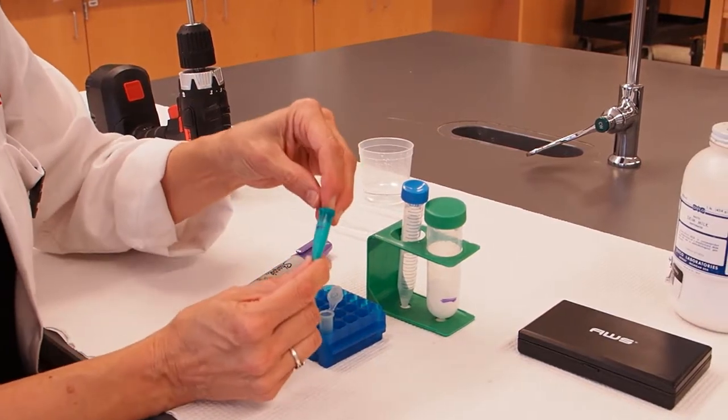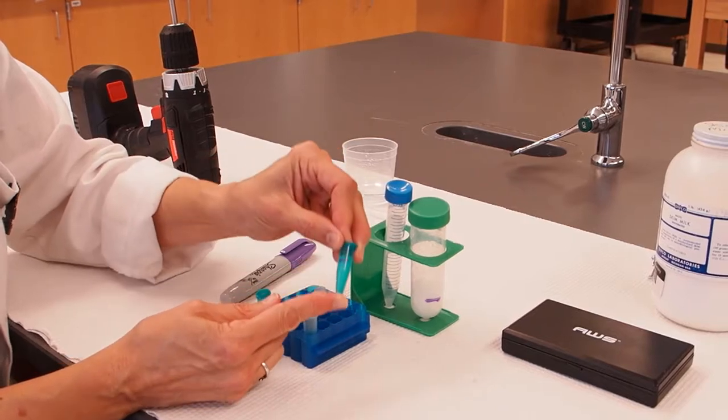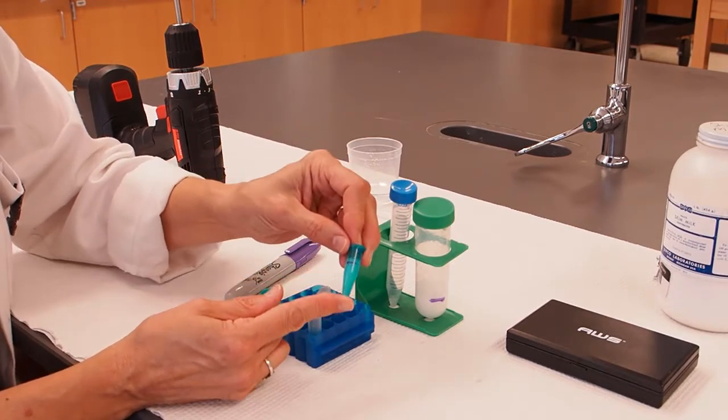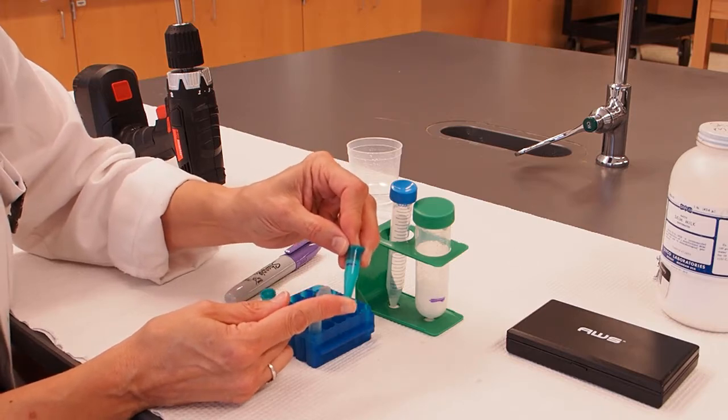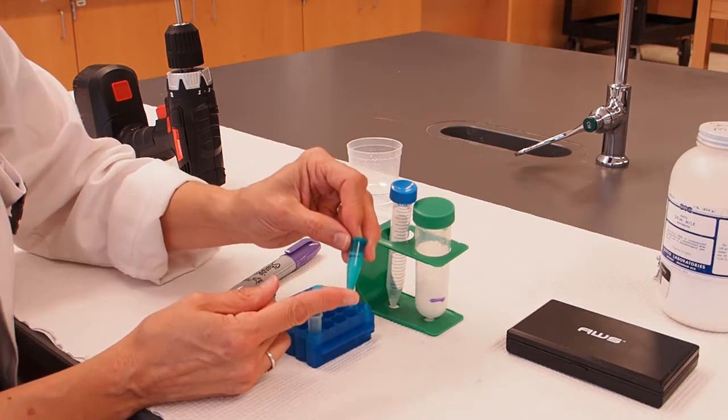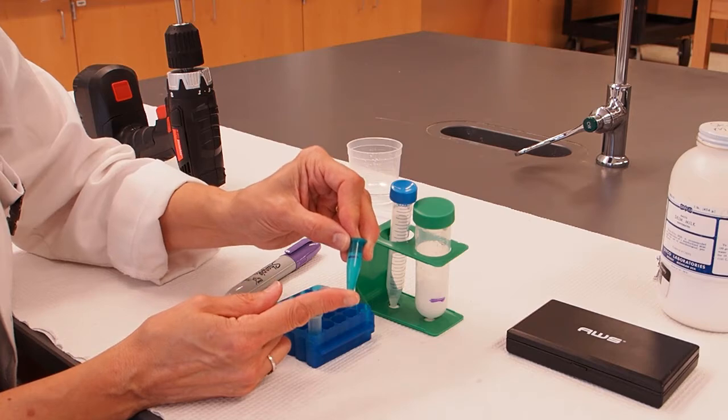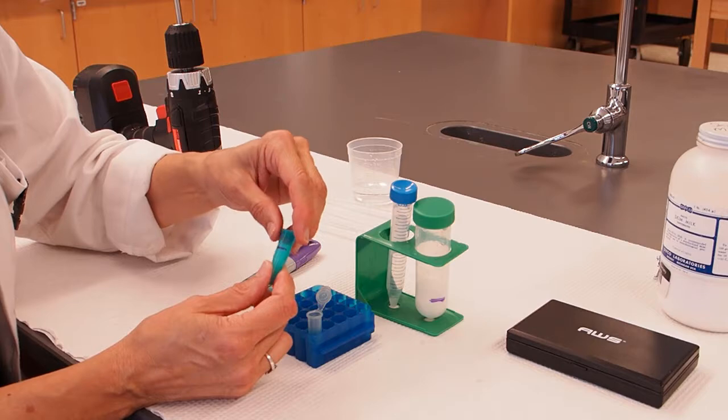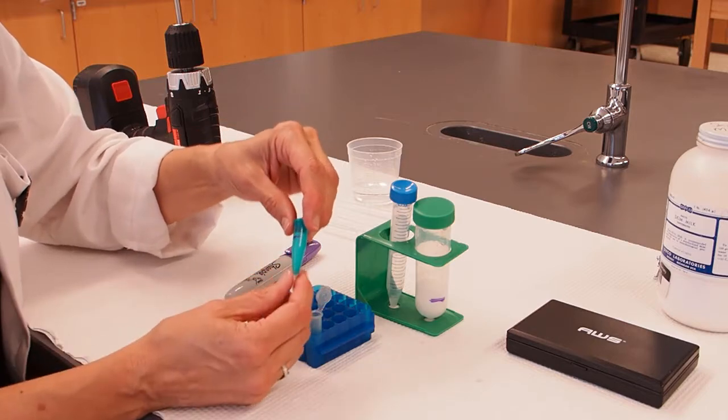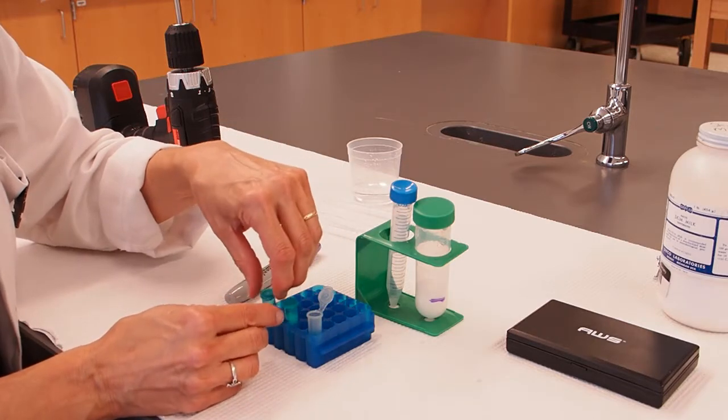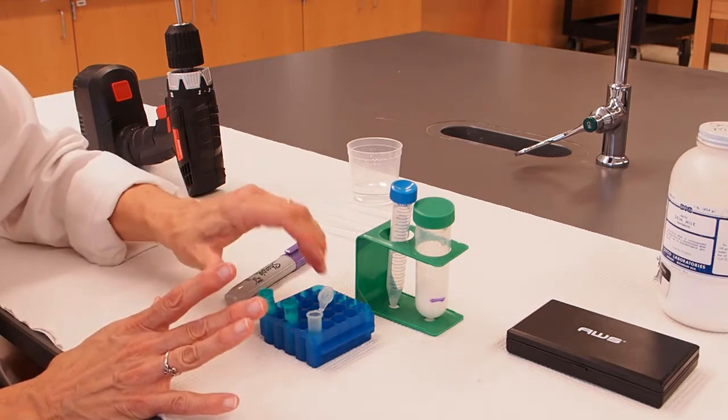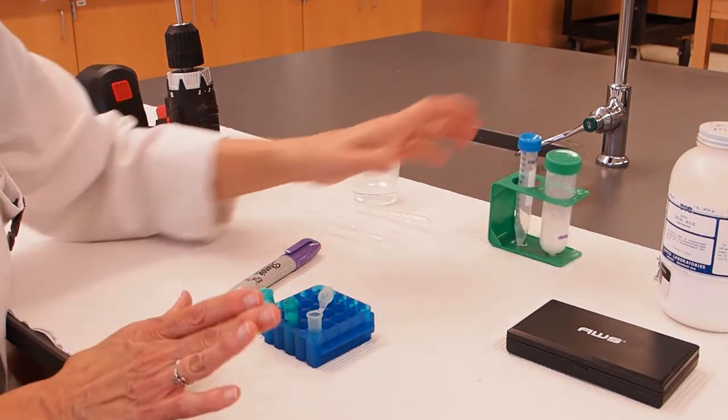It will take time for the chemical reaction that causes the proteins to clump together to occur. That reaction will happen faster at a warmer temperature. If you have a heat block that works, you can set it to 37 and put this in your heat block for five minutes, or put it in your pocket to keep it warm. If you don't have a way of warming your sample, then just leave it at room temperature for a little bit longer. So 10 minutes would be good.